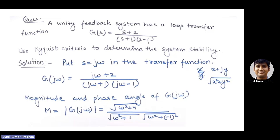Let's take another example. Consider a unity feedback system with open-loop transfer function G(s) = (s+2) / [(s+1)(s−1)]. The problem asks us to use the Nyquist criteria to determine system stability. We must first plot the polar plot, then from the polar plot draw the Nyquist plot, and from the Nyquist plot determine the system stability.